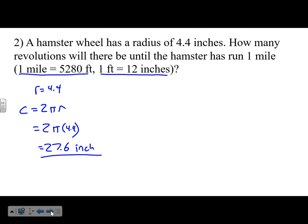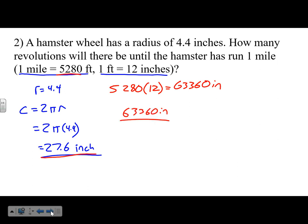One method: convert one mile to inches. 5,280 times 12 = 63,360 inches per mile. Then divide by 27.6 inches per revolution: 63,360 divided by 27.6 gives 2,295.7 revolutions. So after the wheel spins around 2,295 times, that equals one mile.